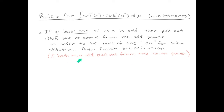A little extra recommendation: if both m and n are odd numbers, it is easier to do this pulling-one-out with the lower power, because the resulting algebra ends up being simpler. Let's do an example.